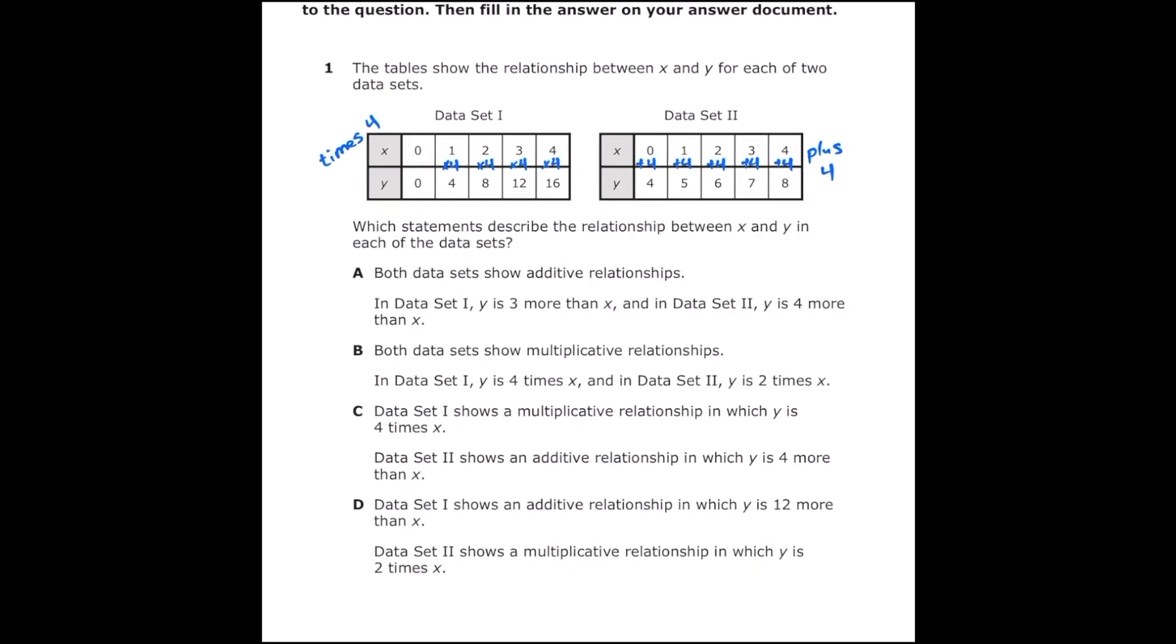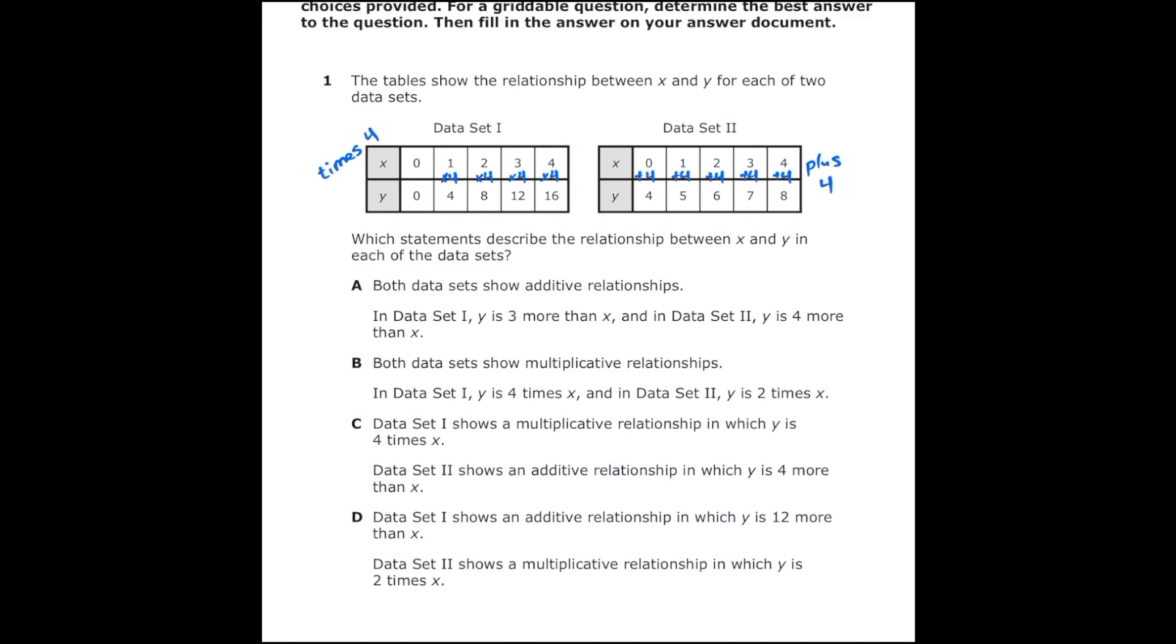Letter A says both data sets show additive relationships. Well that's not true because the first data set is multiplying, it's not adding, so that's not going to be correct. Letter B says both data sets show multiplicative relationships, and that's not true. The second data set is adding.